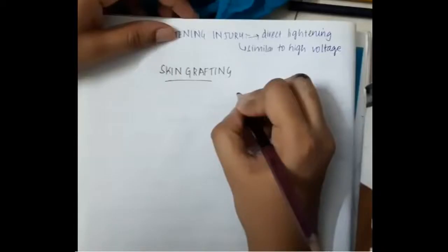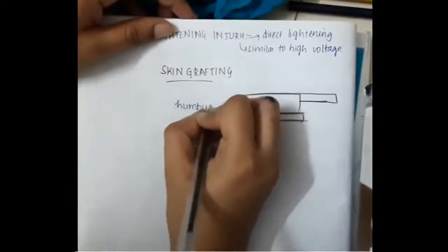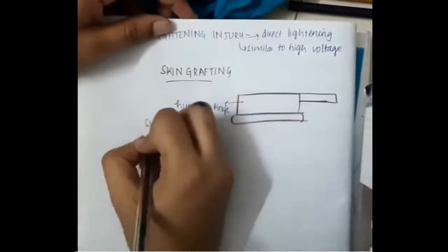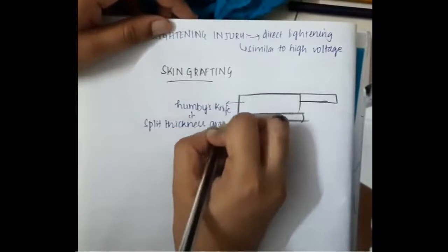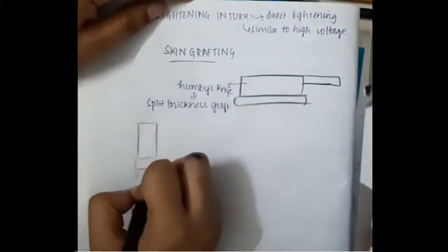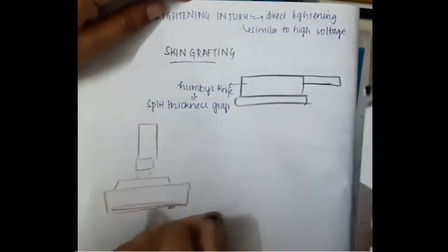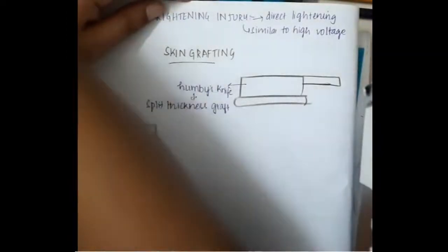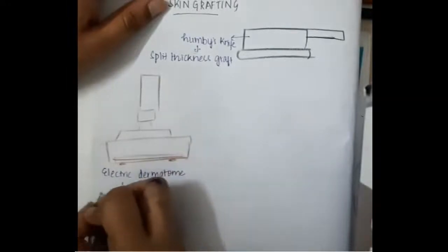Hello friends, let us now learn some important points about skin grafting. First, we are going to learn about Humby's knife. Humby's knife is responsible for split thickness grafting. We also have one more instrument called the electric dermatome, which is used for split thickness grafting.